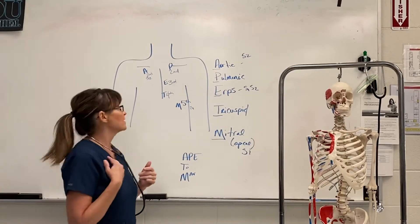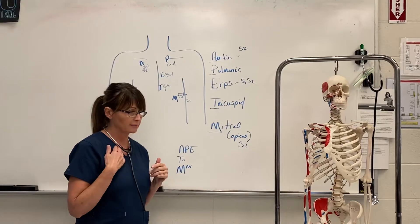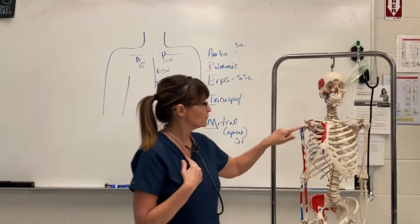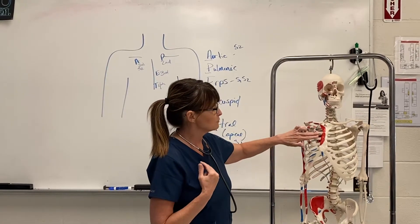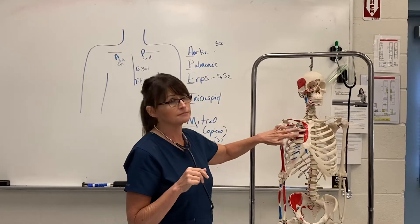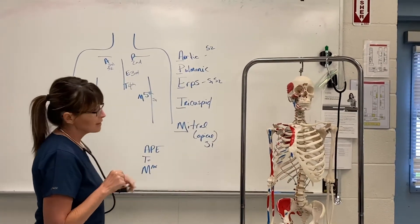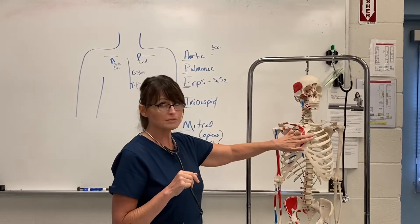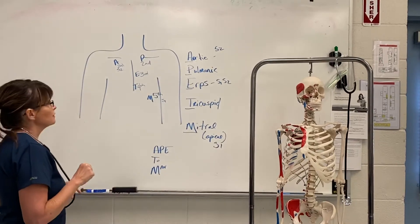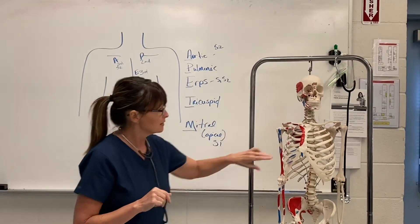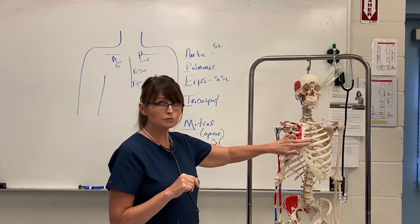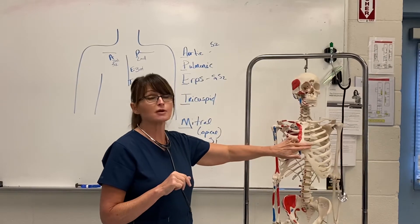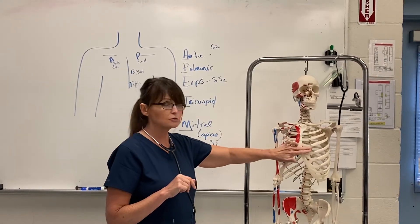When listening for the aortic — that's not apical, aortic — that's in the second intercostal space close to the sternum on the right-hand side. The pulmonic is on the left-hand side, second intercostal space beside the sternum. Directly below that is Erb's point, in the third intercostal space close to the sternum. Below it, in the fourth intercostal space, is the tricuspid, where the tricuspid valve is, close to the sternum.